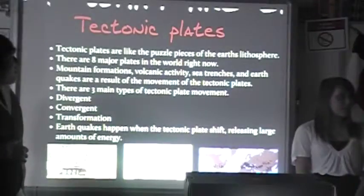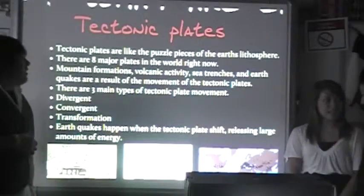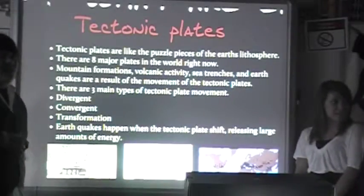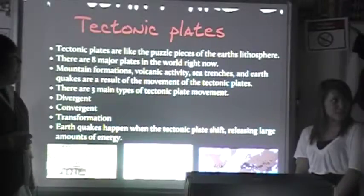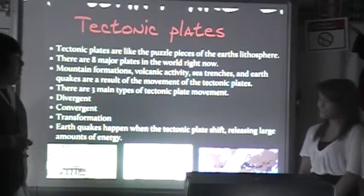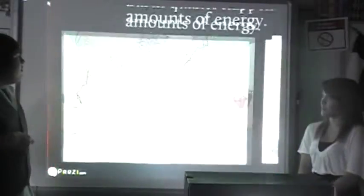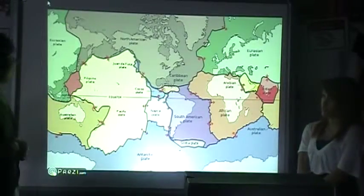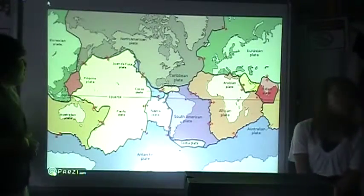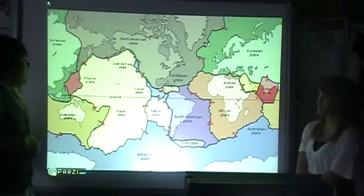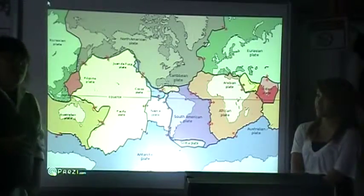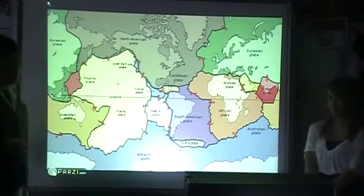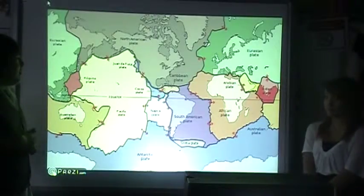Earthquakes happen because of tectonic plates. Tectonic plates are like the puzzle pieces of the Earth's crust. Right now there are eight major plates in the world. As you can see, Japan is in the middle of four major plates. And because of Japan's location, any slight movement of those tectonic plates means Japan is going to be primarily affected.